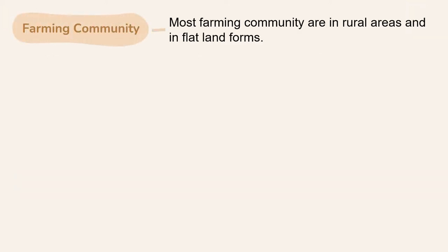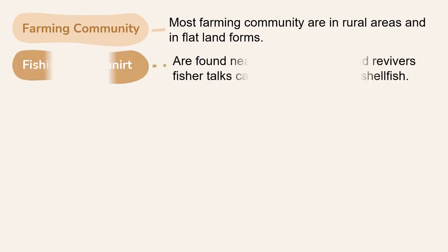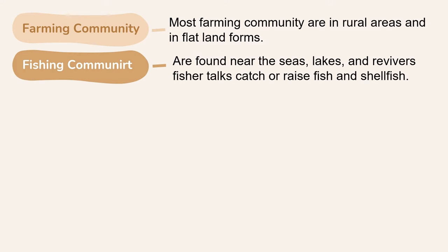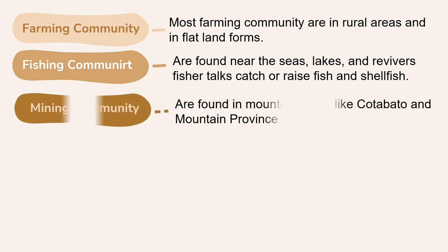Here are examples of community. Farming communities are mostly in rural areas and in flat landforms. Fishing communities are found near the seas, lakes, and rivers. Fisherfolk catch or raise fish and shellfish.